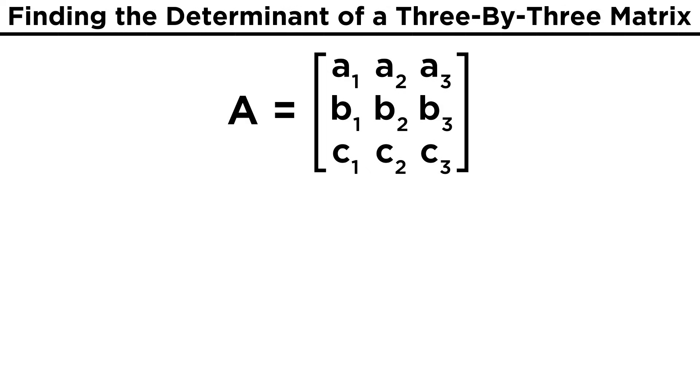However, we did say that we can find the determinant of a square matrix of any size, so let's see what happens when looking at a three by three matrix. Say we have the following matrix, with entries A1, A2, A3, B1, B2, B3, and C1, C2, C3.